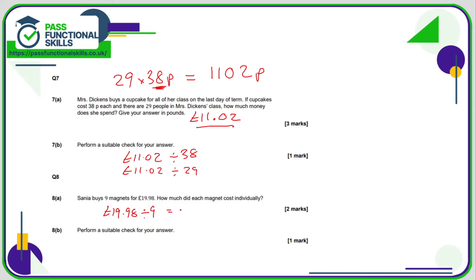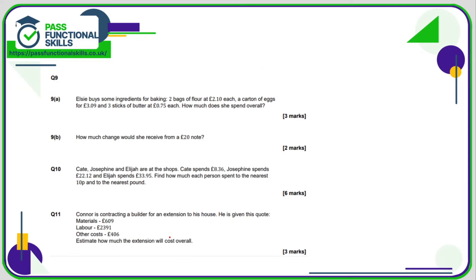Question eight: if nine magnets cost £19.98, then one magnet is £19.98 divided by 9, which works out at £2.22. The check: £2.22 multiplied by 9 should give us £19.98 — and of course it does.